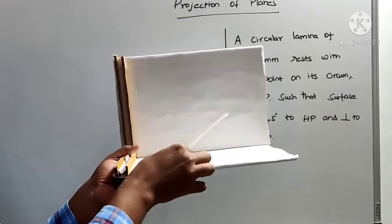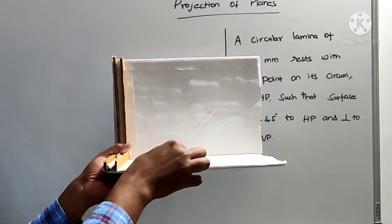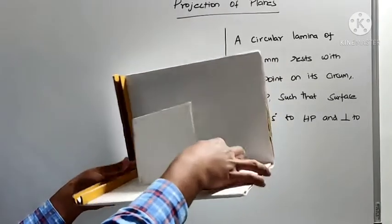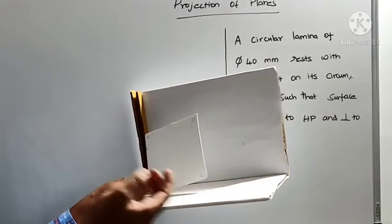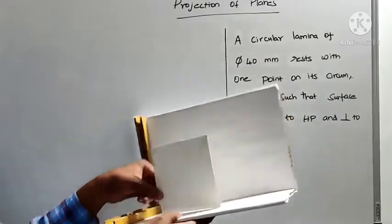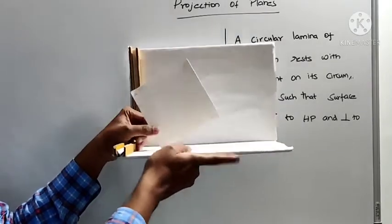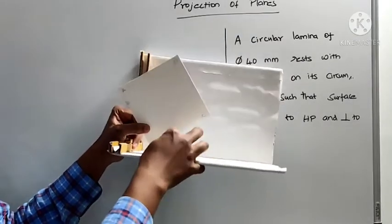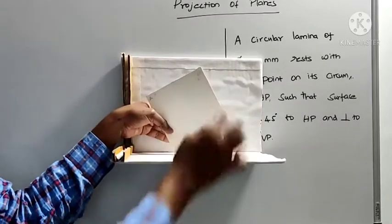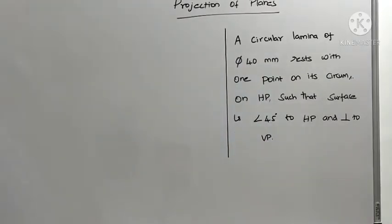If they say it is inclined at 45 degrees to HP, it should be positioned something like this. If they say the edge of a lamina or side of the lamina is inclined at 45 degrees, then it should be positioned something like this — this angle should be 45 degrees.